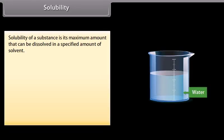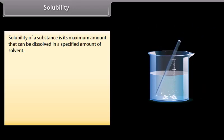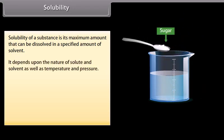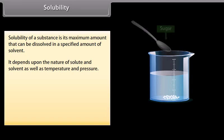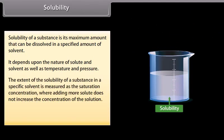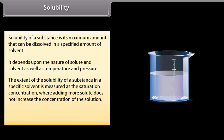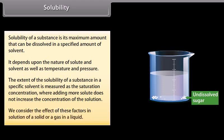Solubility of a substance is its maximum amount that can be dissolved in a specific amount of solvent. It depends upon the nature of solute and solvent as well as temperature and pressure. The extent of solubility is measured as the saturation concentration, where adding more solute does not increase the concentration of the solution. We consider the effect of these factors in solutions of a solid or a gas in a liquid.